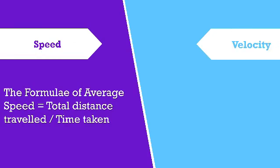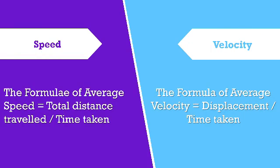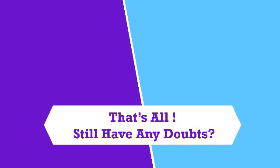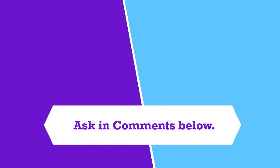The formula of average velocity equals displacement divided by time taken. That's all. Still have any doubts? Ask in comments below. Subscribe now for more videos.